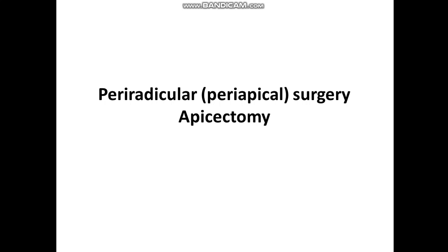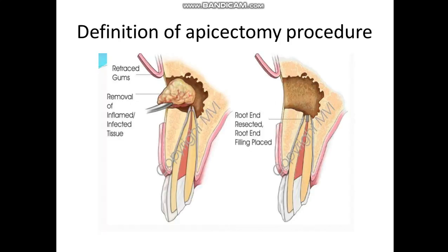By definition, the apicoectomy procedure can be defined as surgical removal of the apical third of the root, so as to obtain good apical seal and also removal of apical or periapical pathosis. Usually, the periapical pathosis is established when there is contamination of the periapical area with microorganisms or bacteria, and usually the source of this bacteria is from the root canal. When the bacteria move through the root canal and contaminate the periapical area, it will lead to establishment of periapical pathosis.